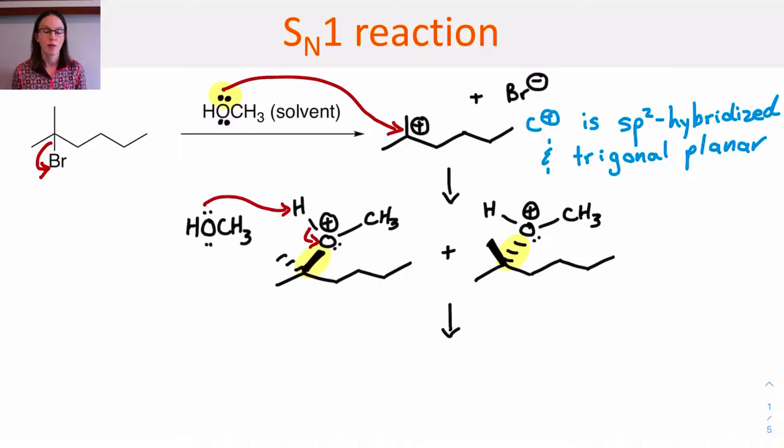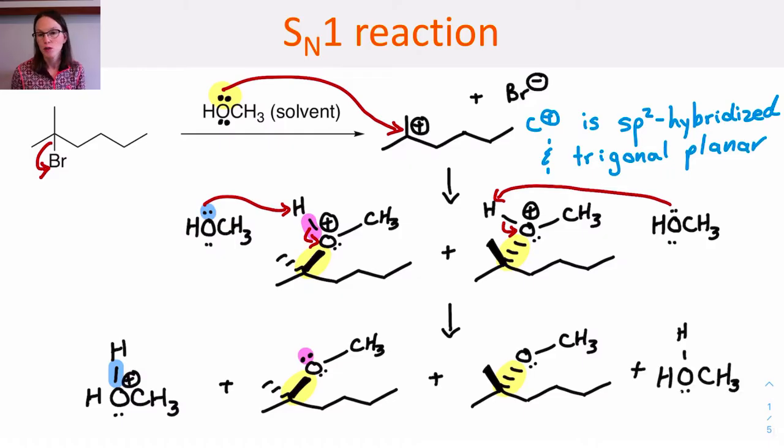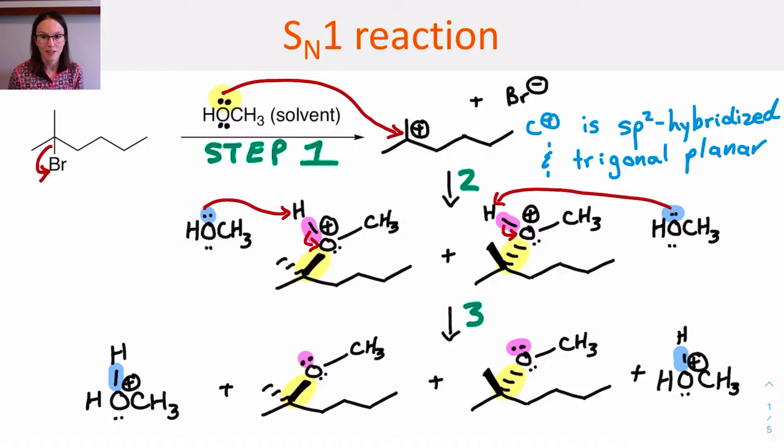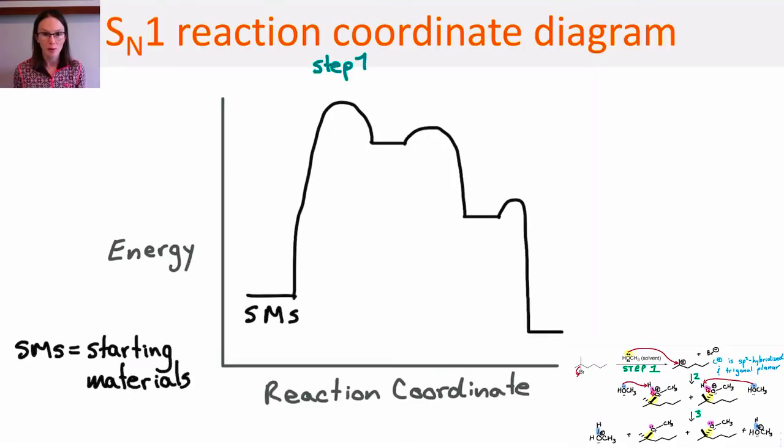In the last step of the reaction, a solvent molecule collides with a proton on that new substitution product, deprotonating it and leading to a neutral final product. So we can look at the reaction coordinate diagram for the reaction.